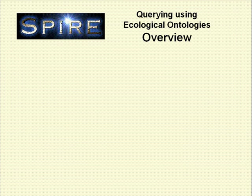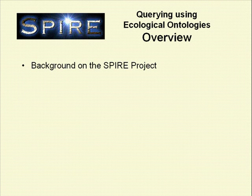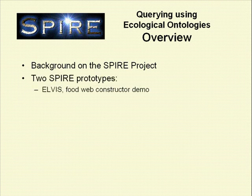Today we will demonstrate how we issue queries against multiple semantic web documents in ecology. We'll start by giving background on the Spire project, then we'll look at two Spire prototypes: Elvis, a suite of tools for food web prediction, and Swoogle, our semantic web search engine.